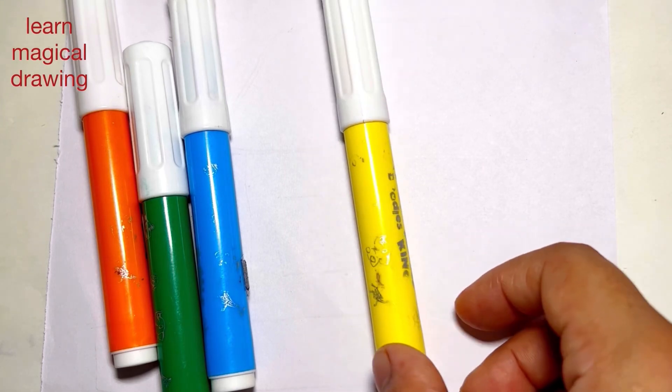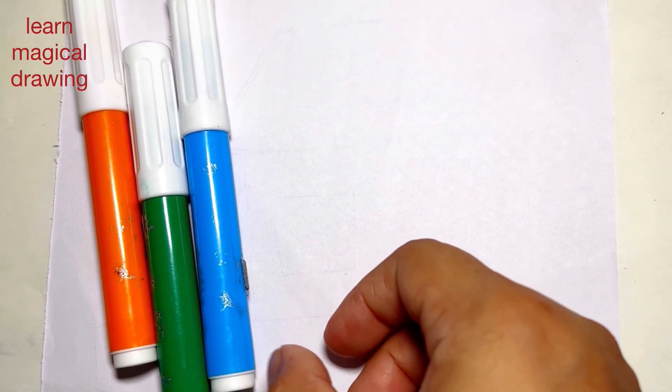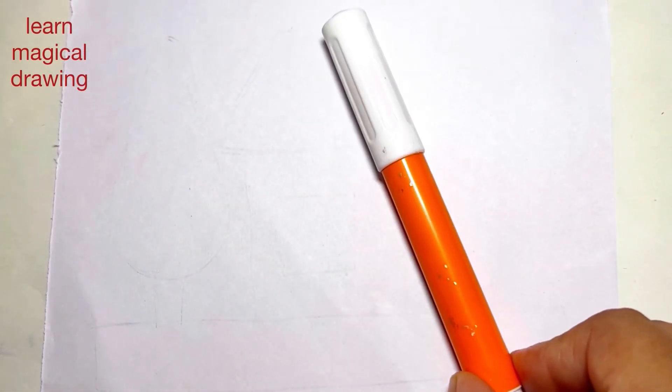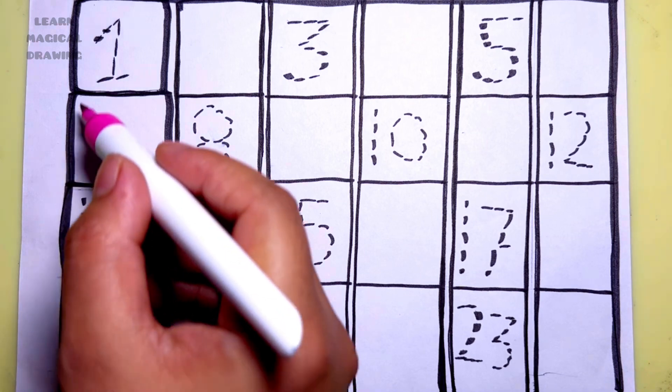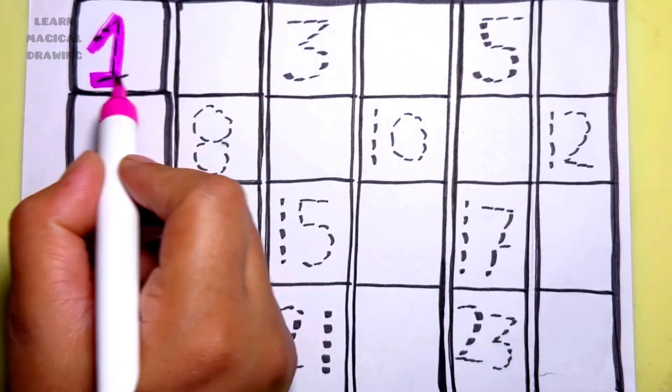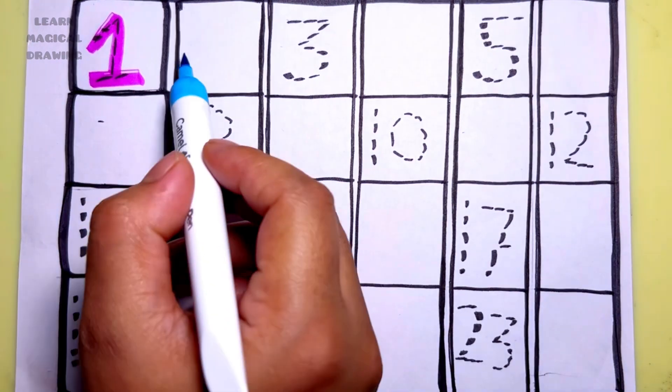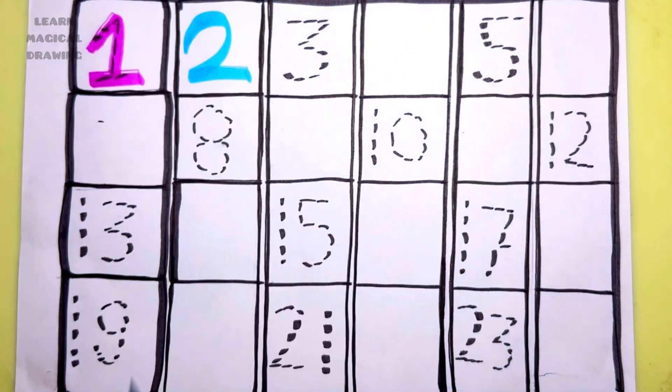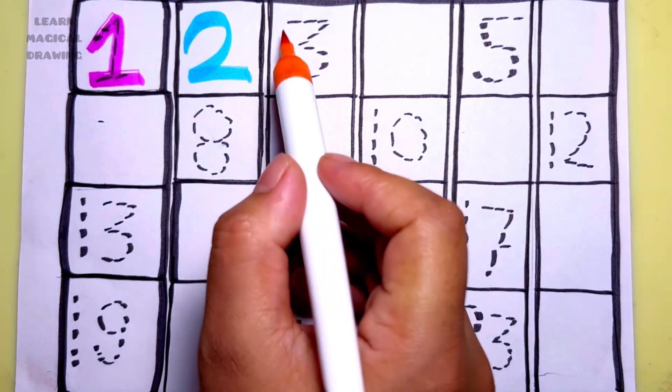Yellow color, sky blue color, dark green color, and orange color. Let's learn numbers: number one, number two, number three, number four.